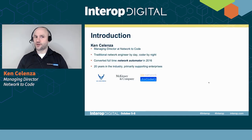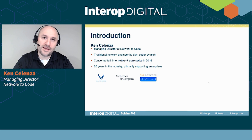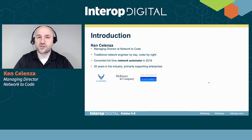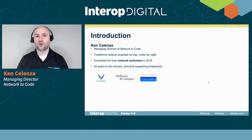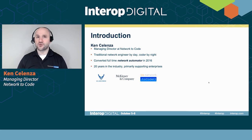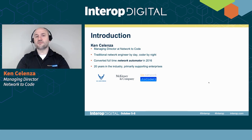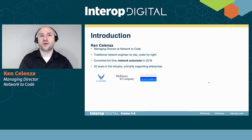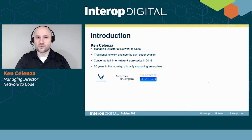I'll quickly introduce myself. I'm Ken Salenza, a Managing Director at Network2Code. I was one of your traditional network engineers, always coding and programming in the background throughout my various network teams. I became a full-time network automator when I joined Network2Code in 2016, and I have about 20 years in the industry. I got my start in the Air Force and spent about a decade at McKinsey before joining Network2Code.